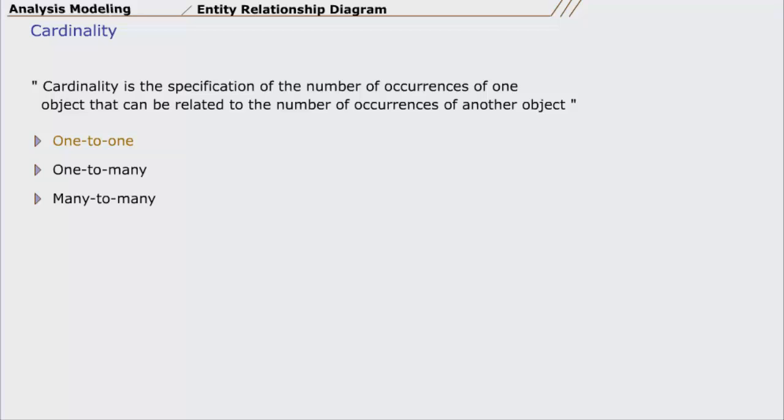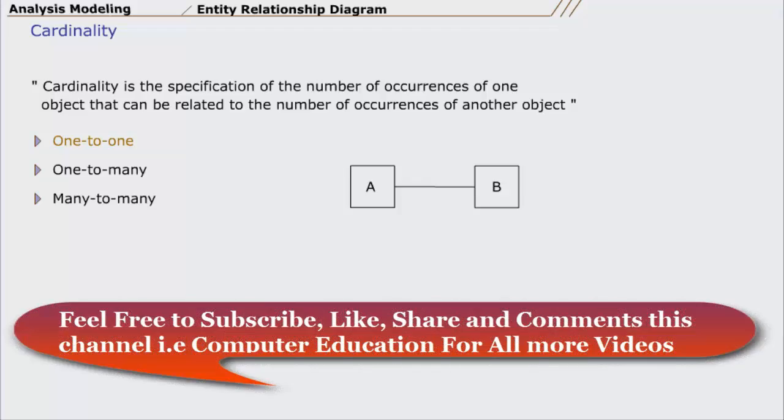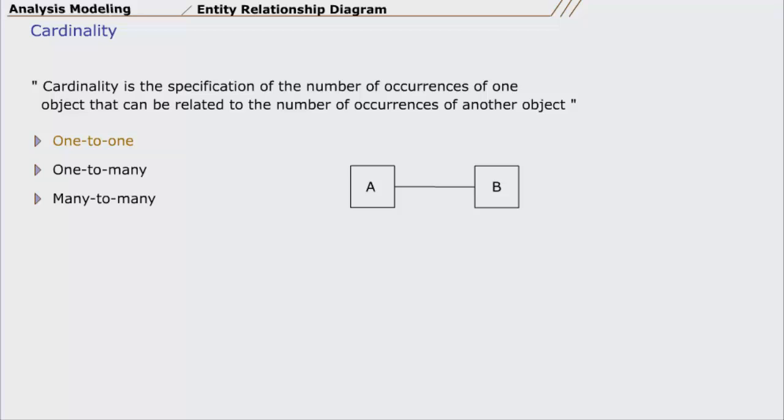One to one relationship means an occurrence of object A can relate to one and only one occurrence of object B, and an occurrence of B can relate to only one occurrence of A. For example, a citizen of Pakistan has a unique national identity card number.